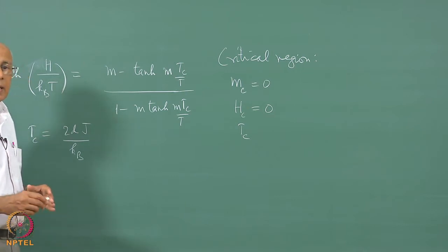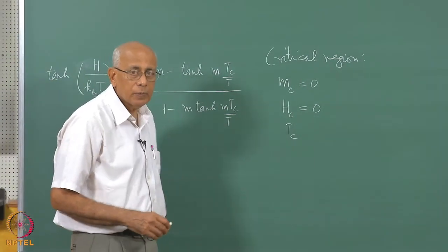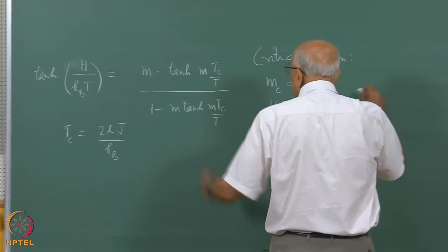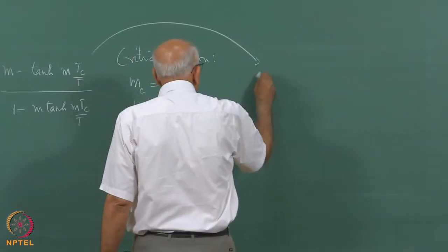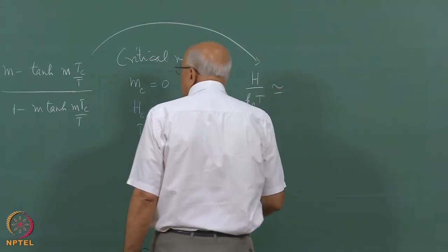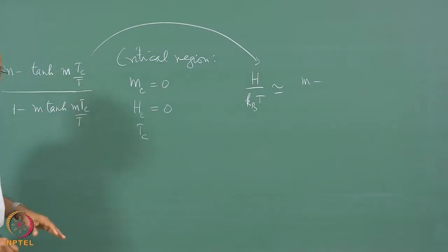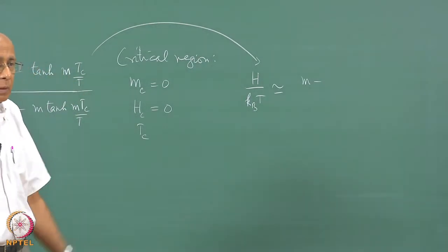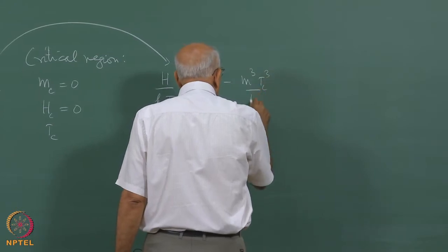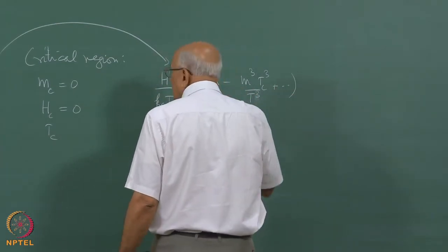The critical region is when M and H are small, very near 0, and T is very close to T_c. To leading order, the equation of state becomes H/k_BT = M minus tanh(X), where tanh(X) goes like X minus X³/3. So it becomes M minus M³·T_c³/T³ plus higher order terms.